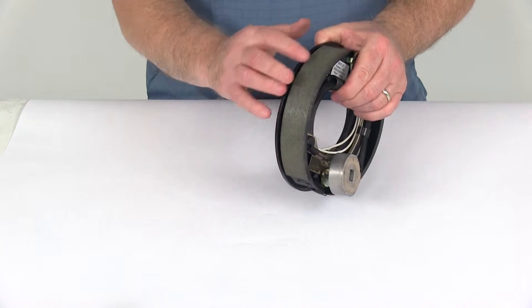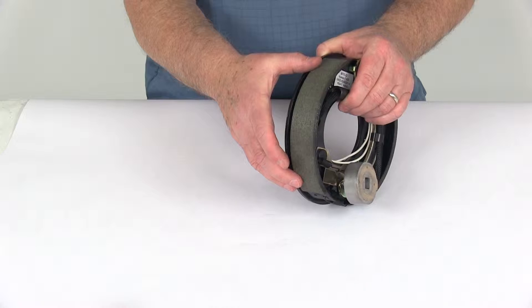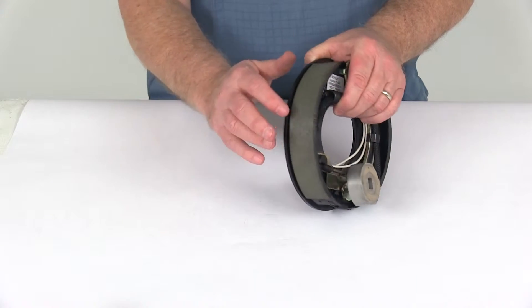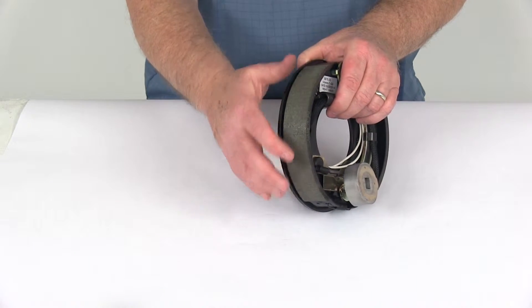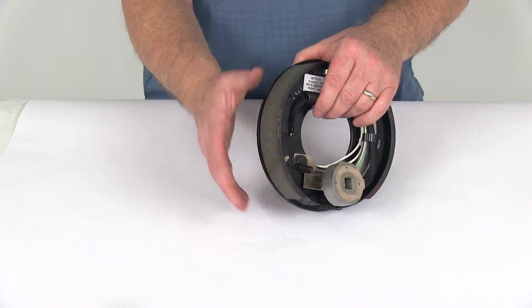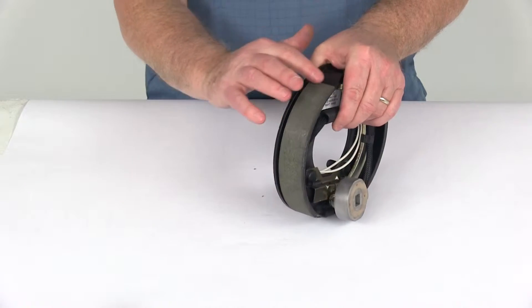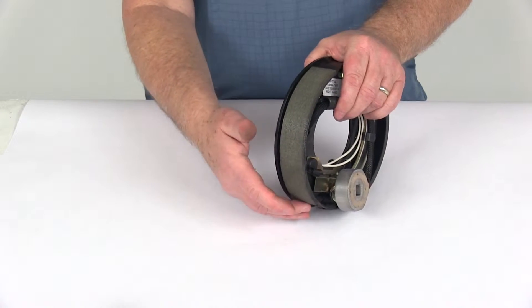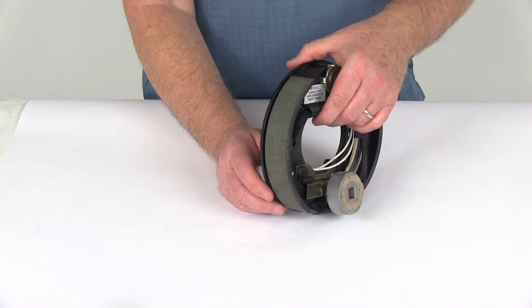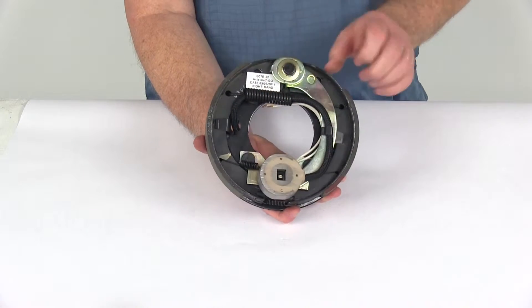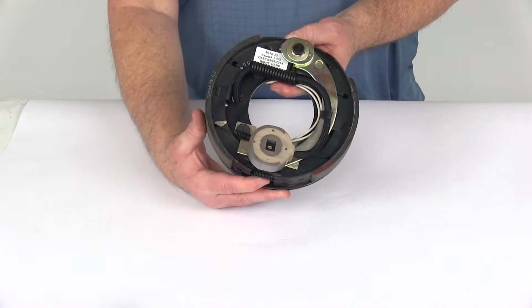The brake shoes are lined with a nice automotive grade friction material. This friction material is fully bonded, not riveted to the shoes, which gives a lot longer life and more braking torque. The edges are tapered, and they do a circular grinding of the material. The reason they do this is to prevent cracking and crumbling that can lead to mechanical lockup.